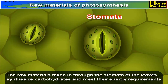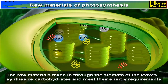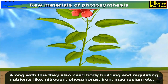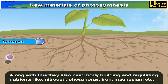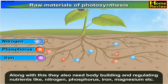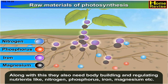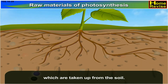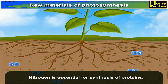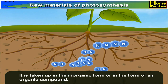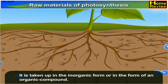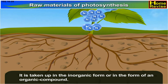The raw materials taken in through the stomata of the leaves synthesize carbohydrates and meet their energy requirements. Along with this, they also need bodybuilding and regulating nutrients like nitrogen, phosphorus, iron, magnesium, etc., which are taken up from the soil. Nitrogen is essential for synthesis of proteins. It is taken up in the inorganic form or in the form of an organic compound.